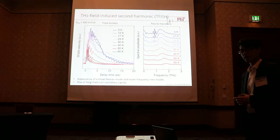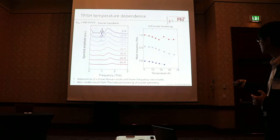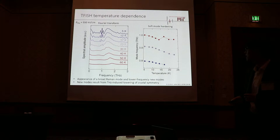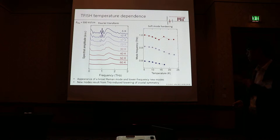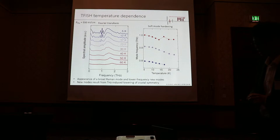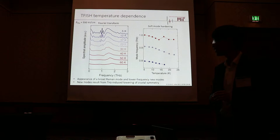If we take a closer look at the frequencies of these new modes, we find that in the equilibrium phase there are four modes in this frequency range — two of them are IR-active, two are Raman-active. These modes are all hardening with temperature, which is another good indication that we are indeed in the ferroelectric state.